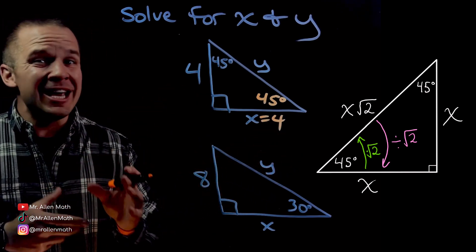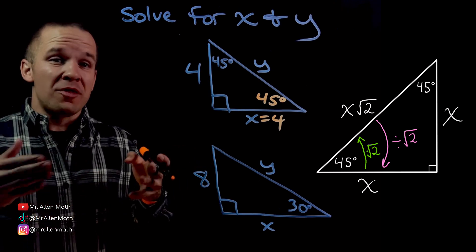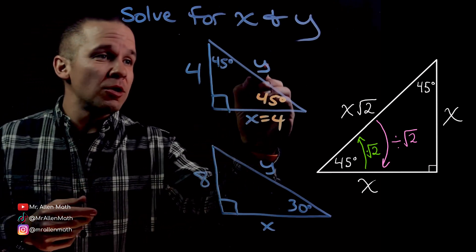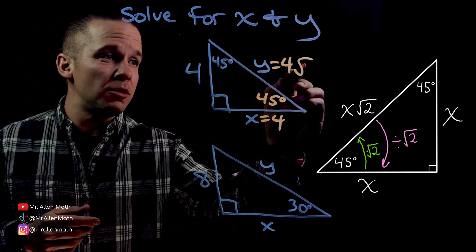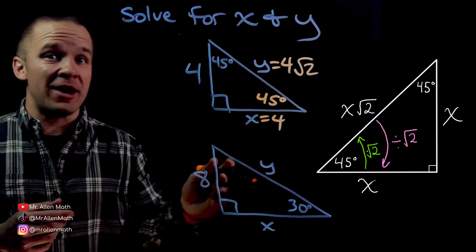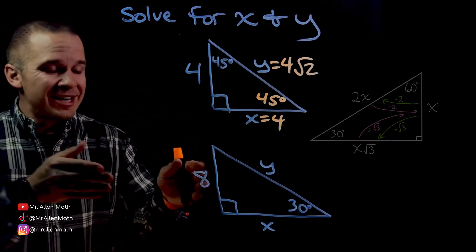Now for my hypotenuse: it is root two times larger than the legs. So all this is going to be is four times root two, which I can just leave as four root two. First triangle done.